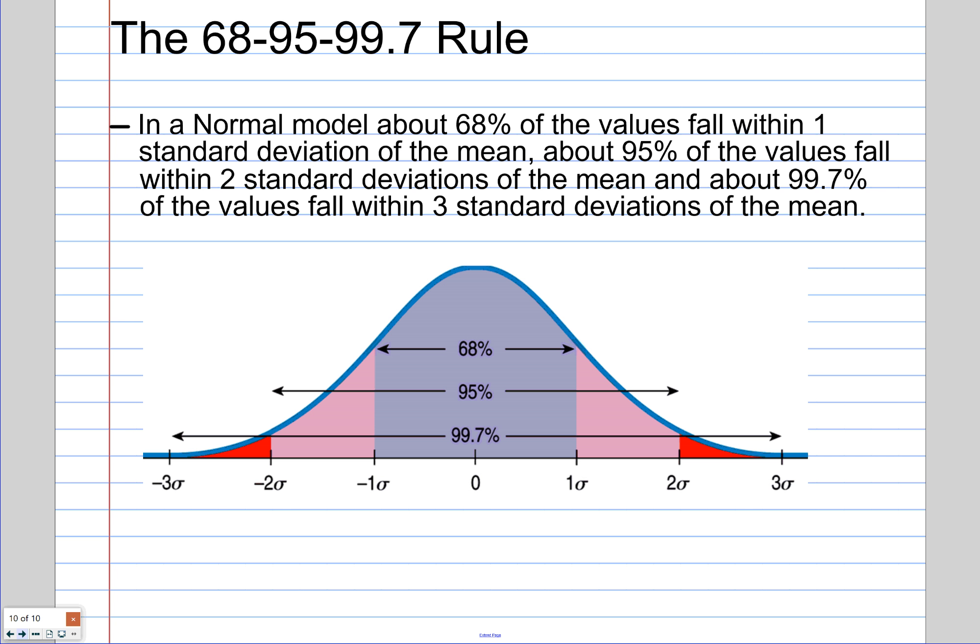So for the last slide on the 68-95-99.7 rule, the idea is that if you have a normal model, this can tell you a lot about how much of your data is going to be under this curve. In the normal model, your mean is going to be right in the middle. So the mean of your data always has a z-score of zero. If you have your mean and subtract the mean, you get zero. If you move one standard deviation above and one below, you will find approximately 68% of your data will fall between one standard deviation above and one standard deviation below. So that means z-score of one and z-score of negative one. If you do the same thing for two above and two below, that's now 95% of your data will fall between two and negative two for z-scores.